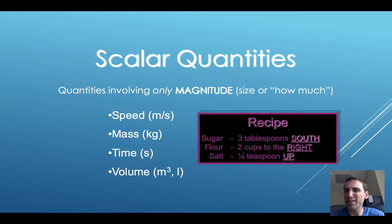Scalar quantities actually don't make much sense if you do include a direction. Let's say you're looking at a recipe and it tells you to add three tablespoons of sugar south, or two cups of flour to the right. That doesn't really make any sense.